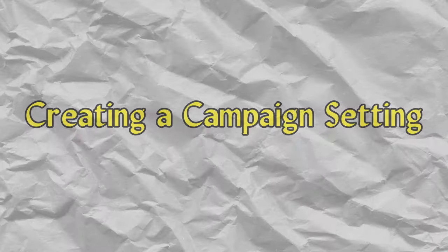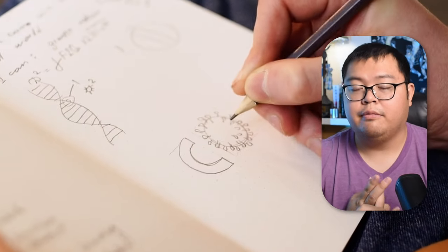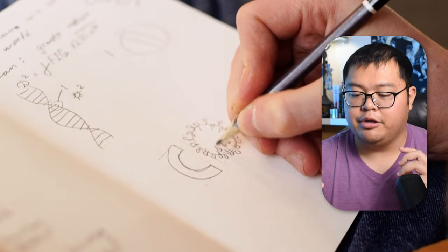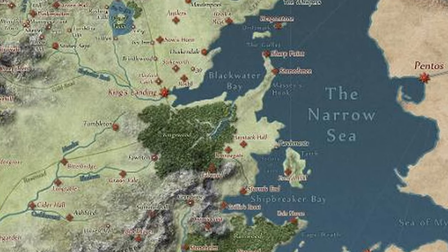First, let's talk about creating a campaign setting. There are really two ways to do this. You can run a pre-made setting where everything is made for you, or you can run a homebrew campaign where you make everything from scratch. Choosing between the two is really about how much time and effort you want to put in. Homebrewing your own world is a ton of work and a lot more time consuming, but in my opinion, it's also the most rewarding. Pre-made settings are basically already established worlds like Dune, Game of Thrones, or Faerun.